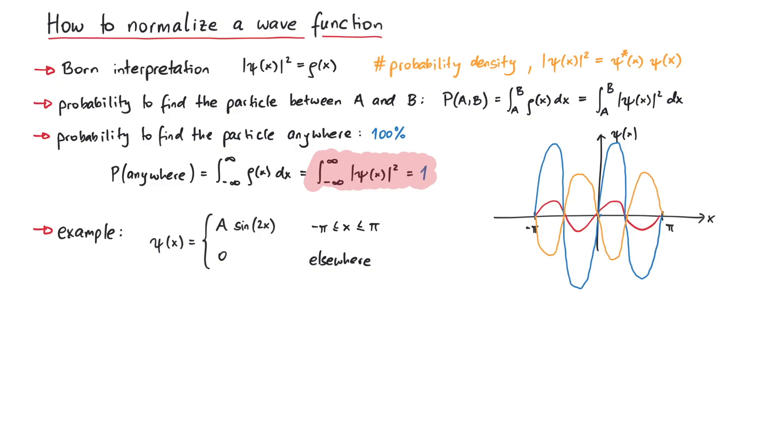The normalization condition now tells us to integrate the absolute square of psi from minus infinity to plus infinity. We can separate this integral into three parts, since the wavefunction behaves differently in each part. Fortunately, the first and last integrals are zero, simply because the wavefunction itself is zero. And the integral in the middle can be written as the absolute square of A times the integral from minus pi to pi over the sine squared of 2x dx.